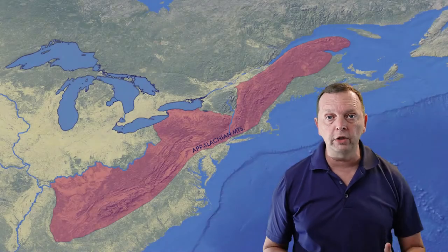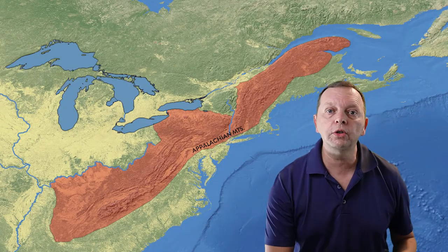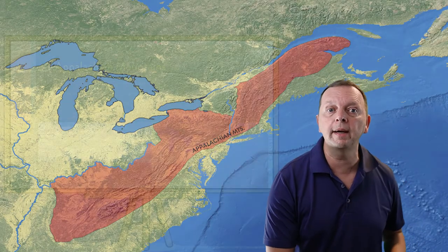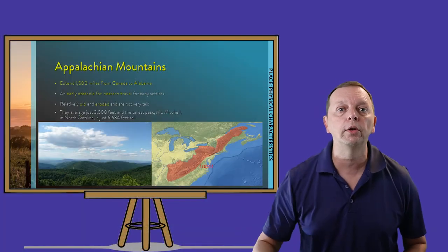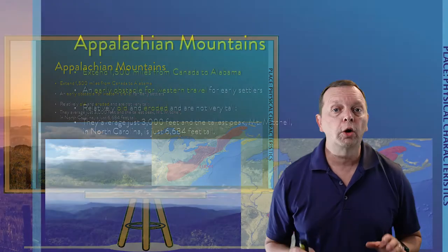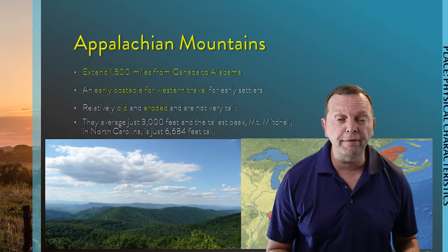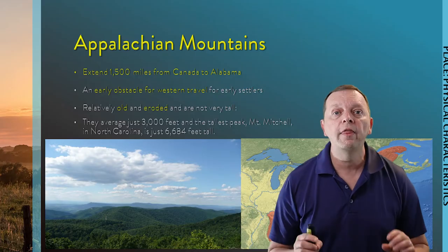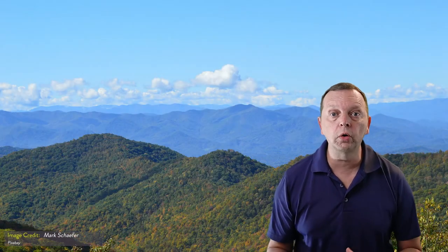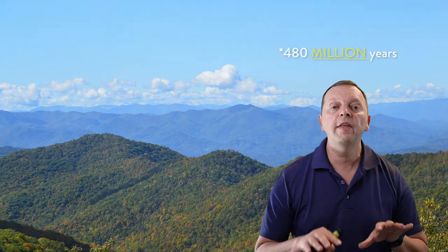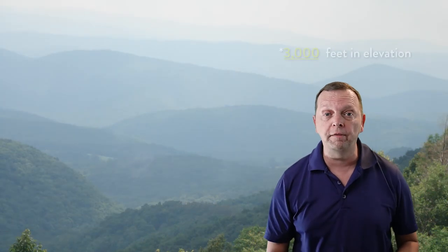As we move further inland from the Atlantic Coastal Plain, we run into our first mountain range, the Appalachians, which starts all the way down south in Alabama and stretches all the way up to the northeast portions of Canada. Created through convergent folding some 480 million years ago, these are old mountains. Through all the weathering and erosion that's occurred over these last 480 million years, they've been worn down to an average of just about 300 feet in elevation — they're really not that very tall.